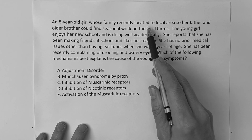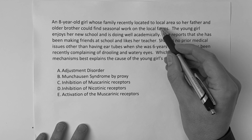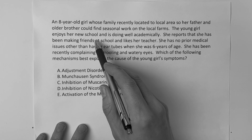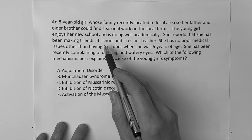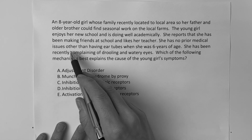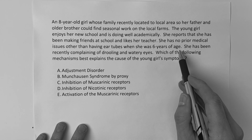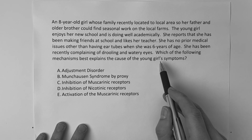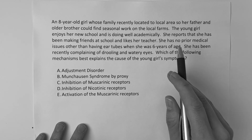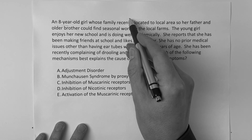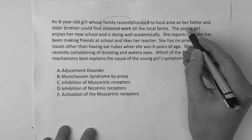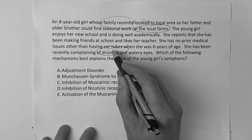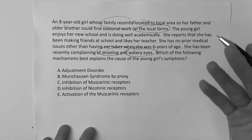An eight-year-old girl whose family recently relocated to the local area so her father and older brother could find seasonal work on local farms. The young girl enjoys her new school and is doing well academically. She reports making friends at school and likes her teacher. She has no prior medical issues other than having ear tubes when she was six years of age. She has been recently complaining of drooling and watery eyes.